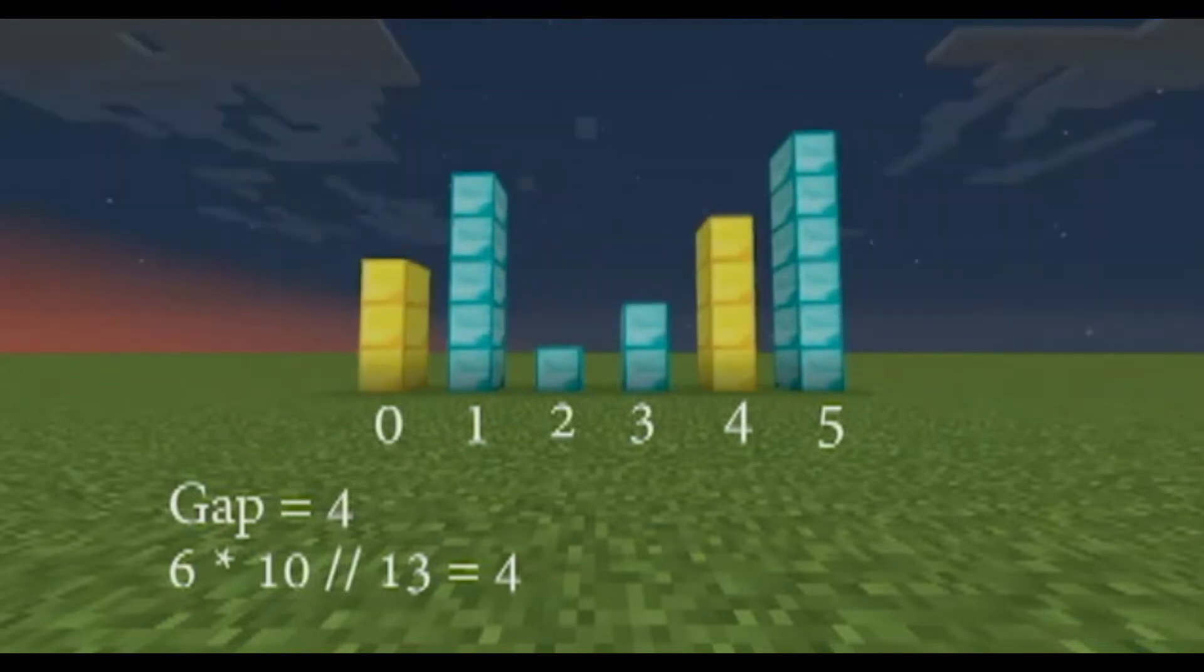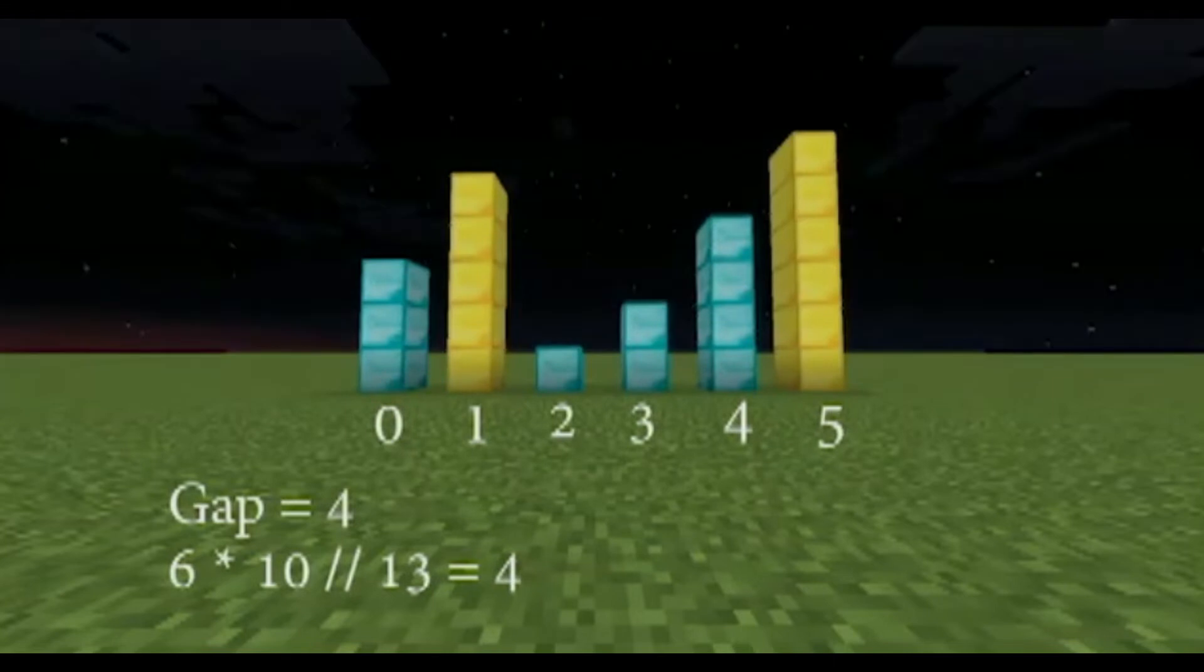At first, index 0 and 4 are compared. That is 4 apart. Then 1 and 5. None of them are out of order, so we don't switch them.